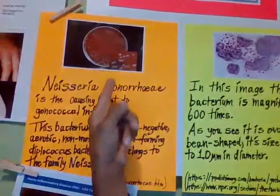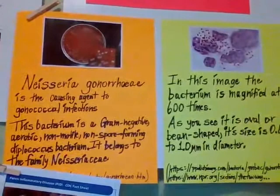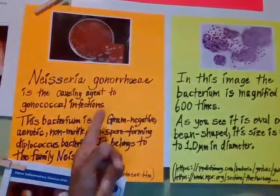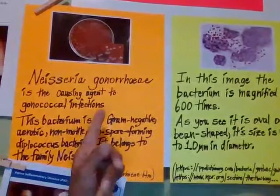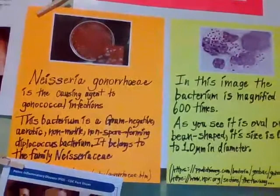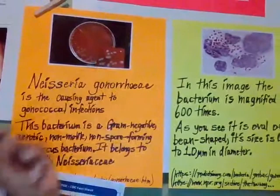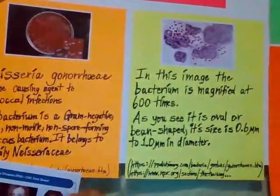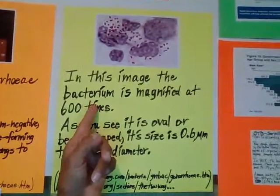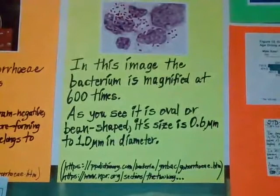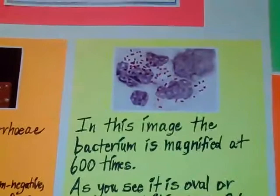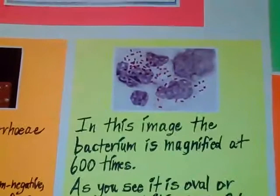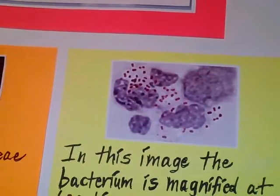In some instances, it's a very difficult kind of bacteria as far as resistance goes. Some infections that have this diplococcal shape usually become resistant to antibiotics. This is a picture of the agar plate — I believe this is a blood agar. Sometimes they grow it on a blood agar and then onto a chocolate agar. This over here is an image of a bacterium magnified at 600 times. It is an oval bean shape, with a size of 0.6 micrometers to 1.0 micrometers in diameter. You can see the circular and diplococcal shape of the bacteria.